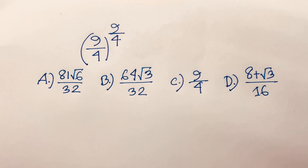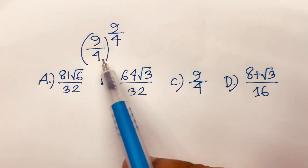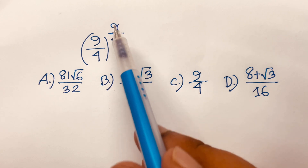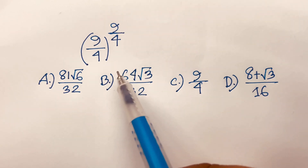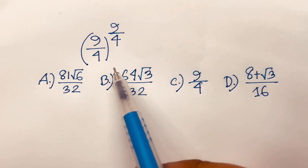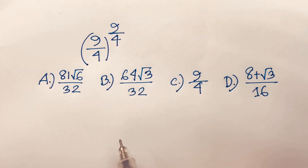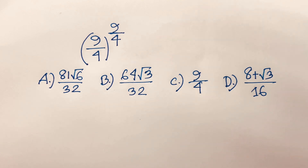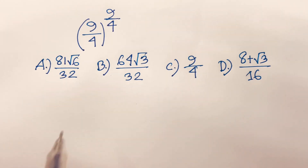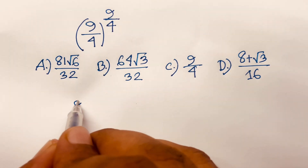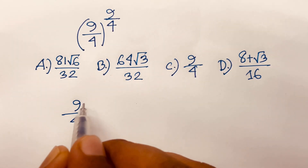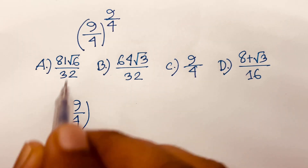Hello everyone. How to solve this Math Olympiad question: (9/4) to the power (9/4). We'll find out what is the right option among the 4 options. Let's start — our equation is (9/4) to the power (9/4).